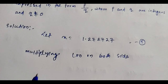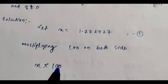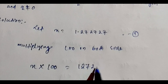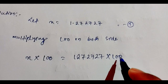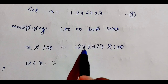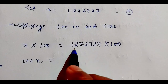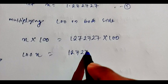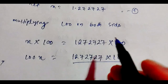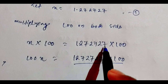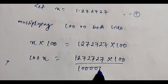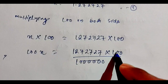So in this equation, multiplying x by 100 gives 100x. On the right side, 1.272727 multiplied by 100 — we need to shift the decimal two places. Let us write it out: 100x equals 127.2727 repeating.